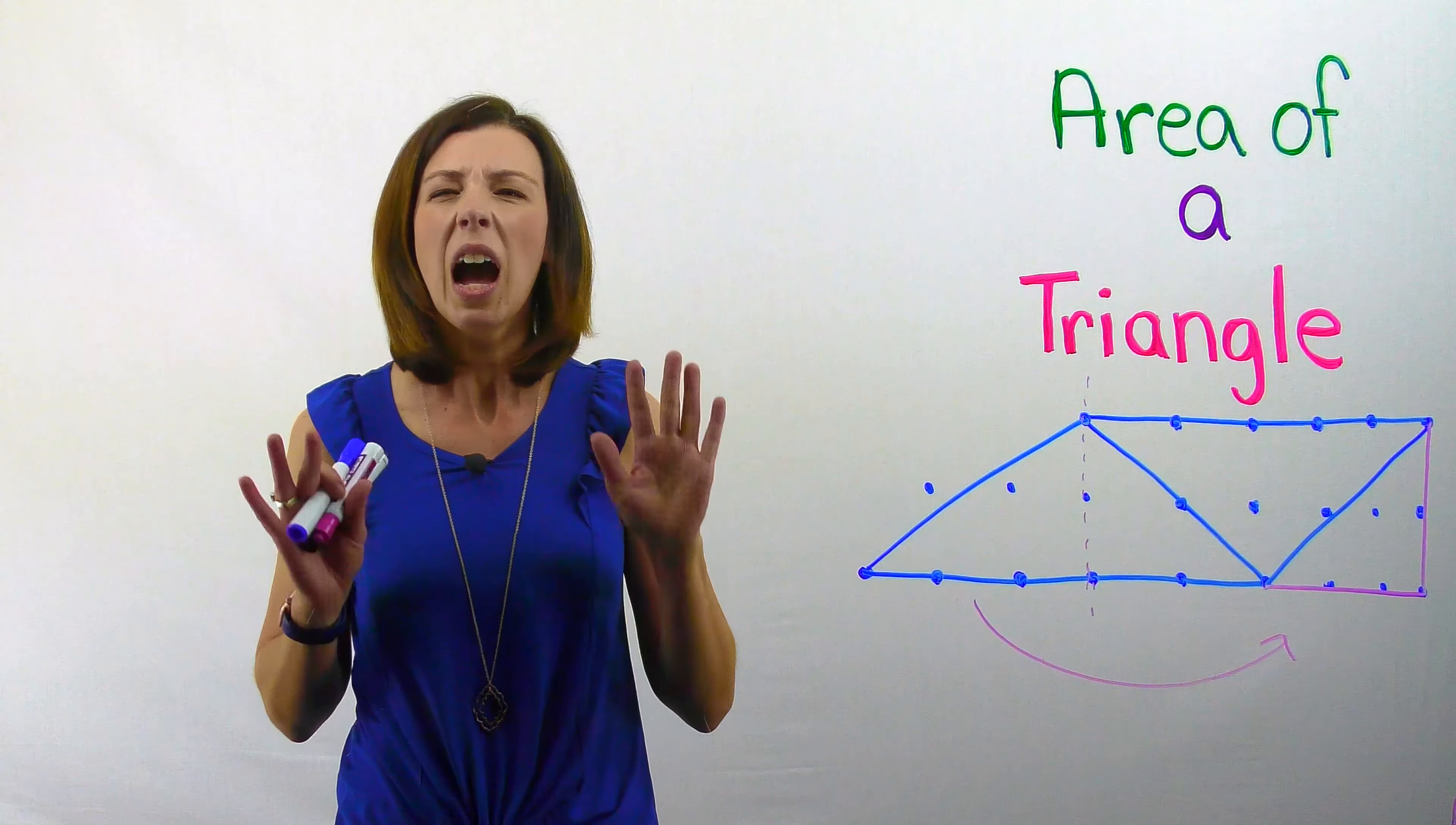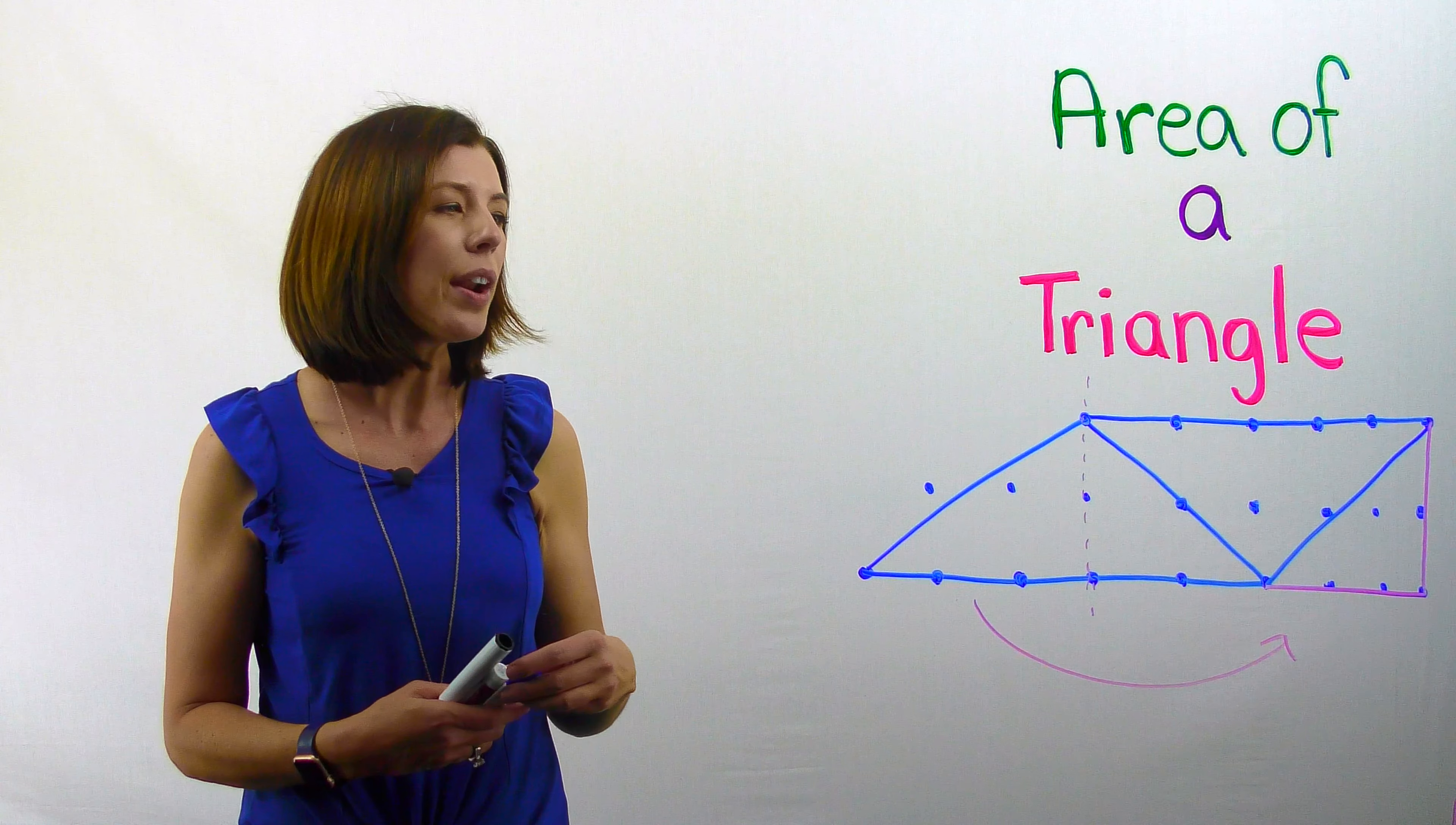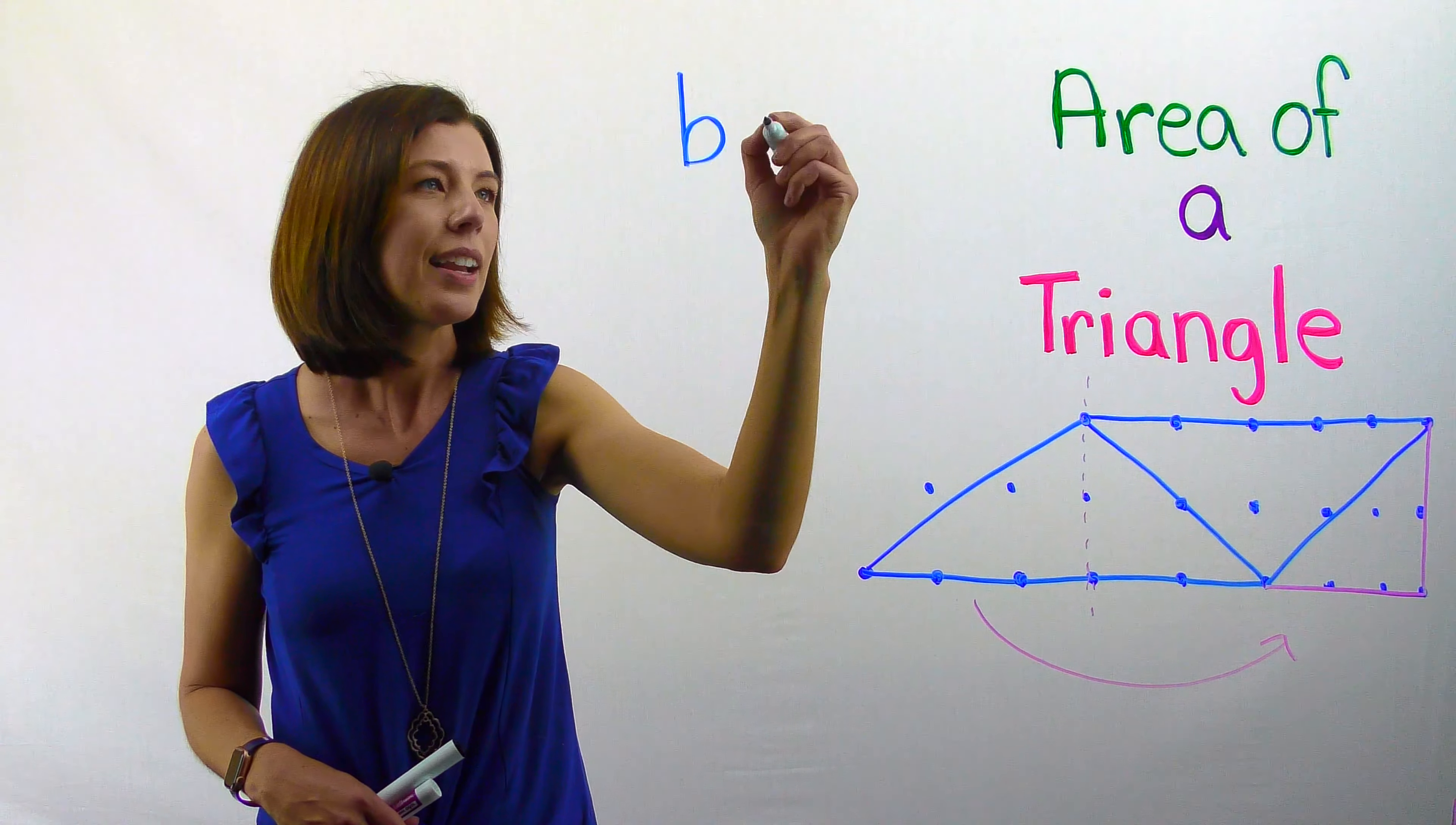So you might be thinking, okay, so the area is base times height. But wait a minute, how many triangles are on here? Two, right? So this is to find the area for two triangles. What if I just want to find the area for one triangle? Let's first think about what our formula is. So I know that the area for a parallelogram is base times height.